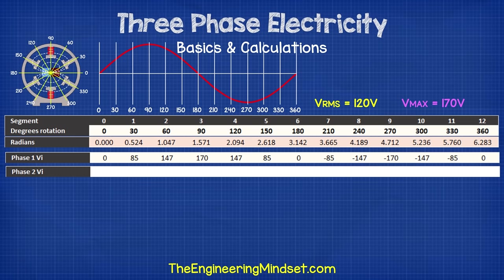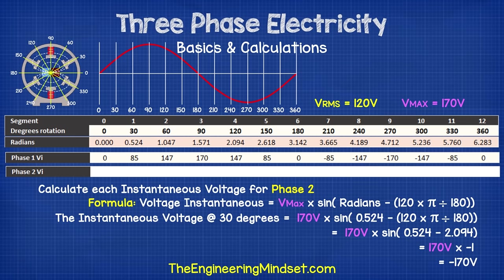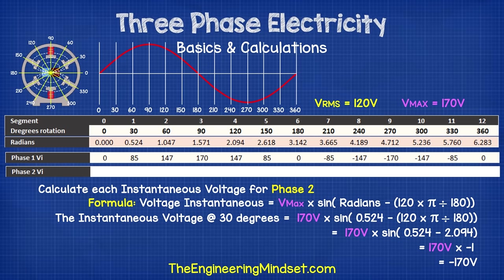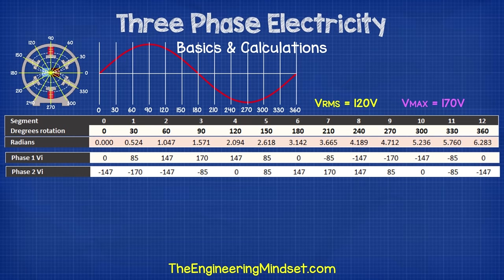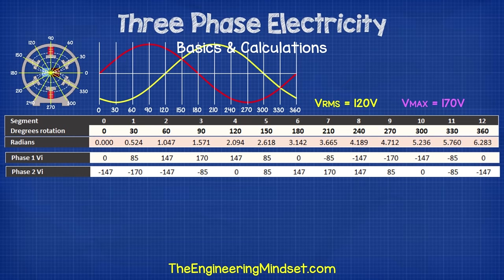We can now calculate phase two voltages using the formula V_max × sin(angle in radians − 120 × π / 180). This end part — 120 × π / 180 — accounts for the delay because the coil is 120 degrees from the first one and converts this to radians. Complete that calculation for each segment through one full cycle, and we can then plot the waveforms for phase one and phase two to see how these voltages are changing.